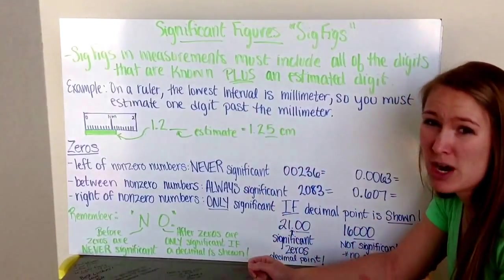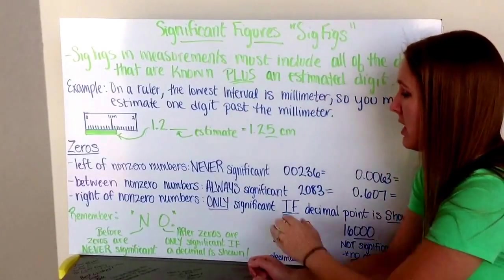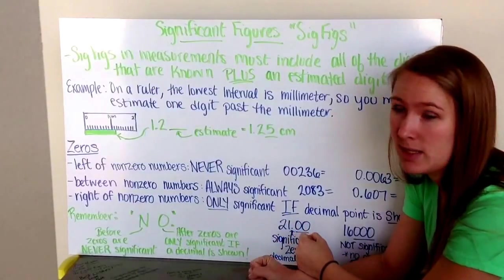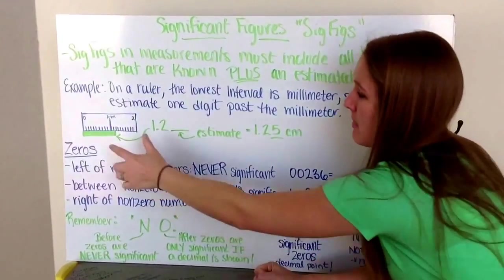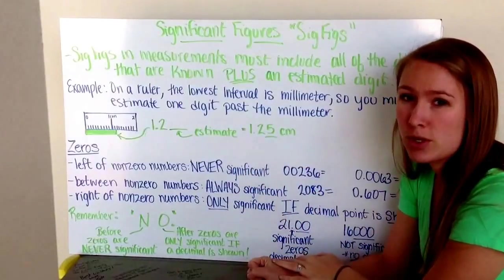Now, of these numbers, which numbers are actually significant and which numbers are not significant? In this case, all of my numbers here are significant because I can tell you exactly how long my little bar is. All non-zero numbers are going to be significant.